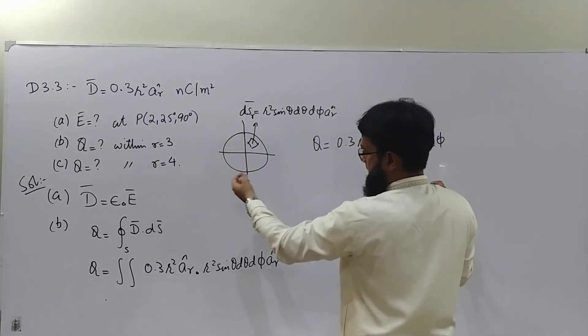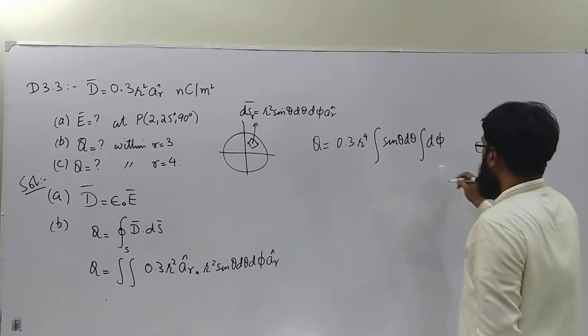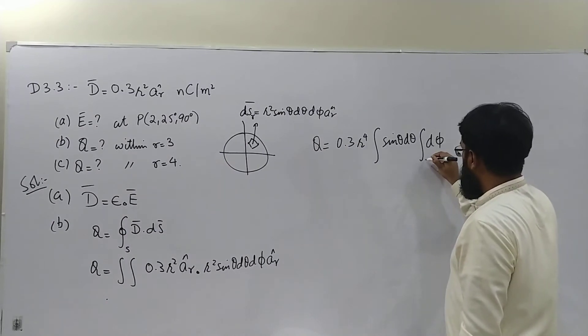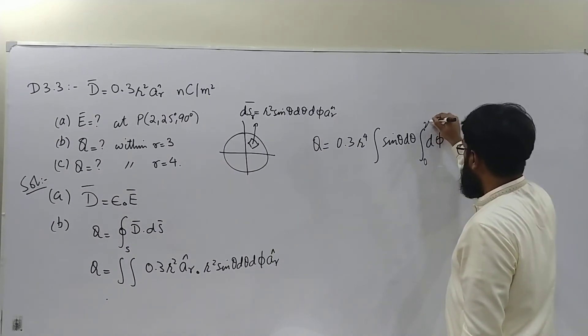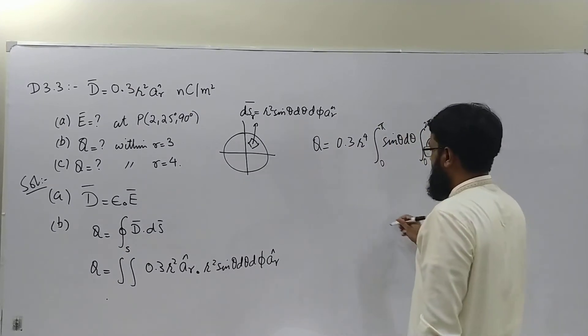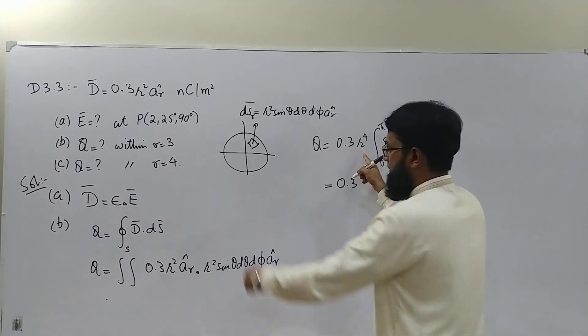Since we are interested in the charge enclosed by the whole sphere, in other words the flux crossing this whole sphere which equals the charge enclosed according to Gauss's law, we should keep the maximum limits. Phi from 0 to 2 pi, theta from 0 to pi. Now replace the value of R which is 3.